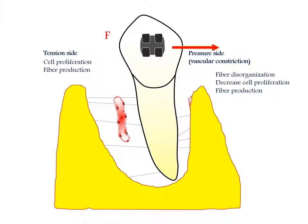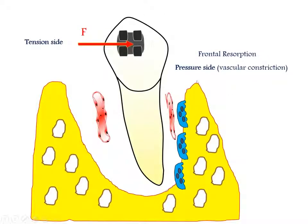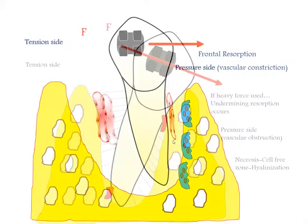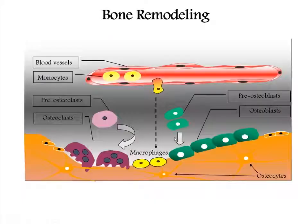With light pressure you get frontal resorption where osteoclasts are recruited from the periodontal ligament space, with macrophages eating bone on one side and osteoblasts adding bone on the other — the net result is tooth movement. With heavy forces you get undermining resorption, hyalinization, cell-free zones — a much more discomforting and longer recovery.